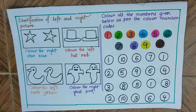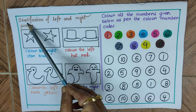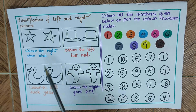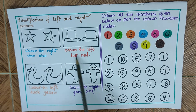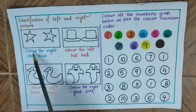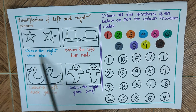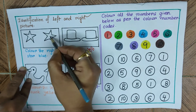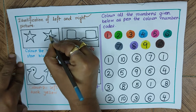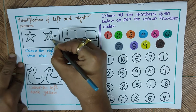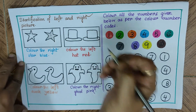This is the second page. The first question involves identification of left and right pictures. We have four pictures with questions below each. The first picture shows two stars — color the right star blue. The left one is this and the right one is this, so we color the right star blue. I'll mark it as B and draw stripes so you understand which one to color.